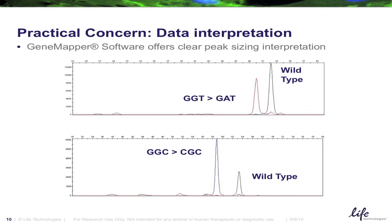This is what the data looks like, where we have a very clear mutation peak in relationship to a wild type peak.